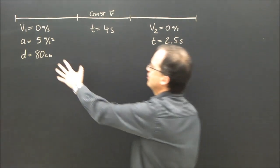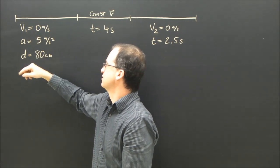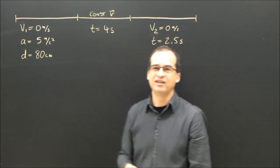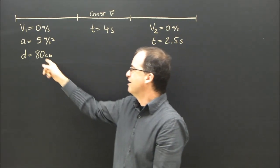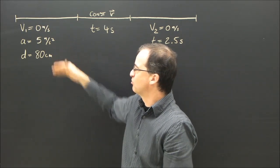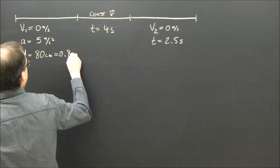So I've put the numbers here of the information you know. This object starts from rest, accelerates at 5 m/s², and travels a distance of 80 cm. Well wait a second, we never use centimeters. Check your units - meters per second, meters per second squared. This has got to be in meters, so that equals 0.8 meters.